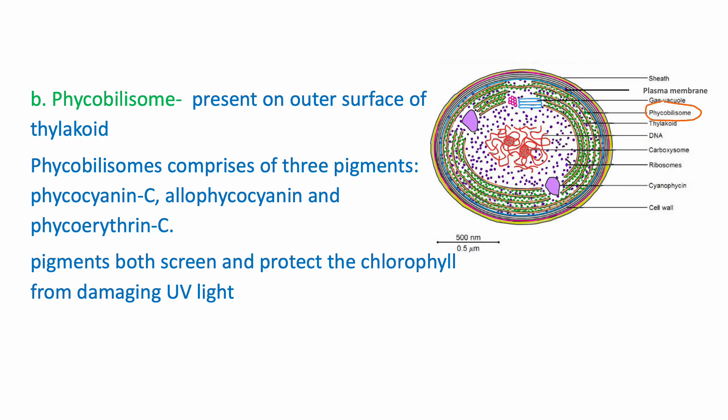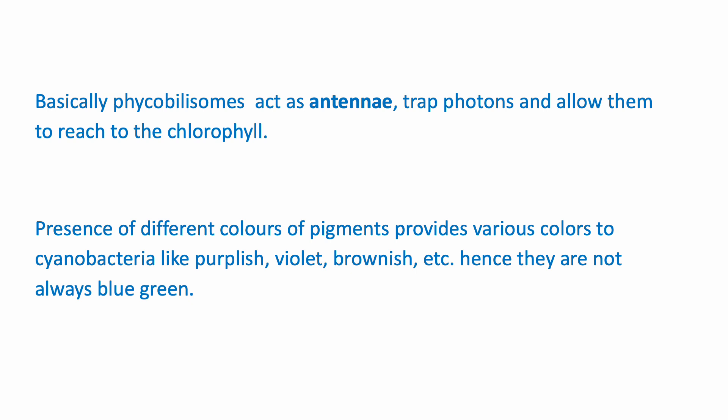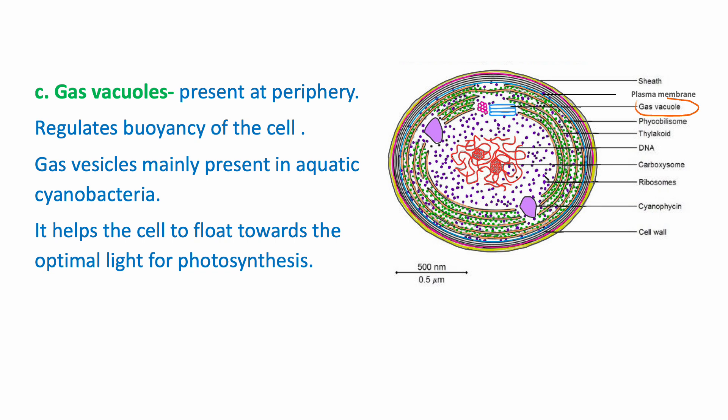Phycobilisomes: the outer surface of thylakoids is studded with particles called phycobilisomes. Phycobilisomes comprise three pigments: phycocyanin C, allophycocyanin, and phycoerythrin C. These pigments both screen and protect chlorophyll from damaging UV light, and also trap photons and allow them to reach the chlorophyll. Essentially, phycobilisomes act as antennae — they absorb light energy and transfer it to chlorophyll for photosynthesis. Due to the different colors of these pigments, cyanobacteria are not always blue-green; they may appear purplish, violet, or brownish.